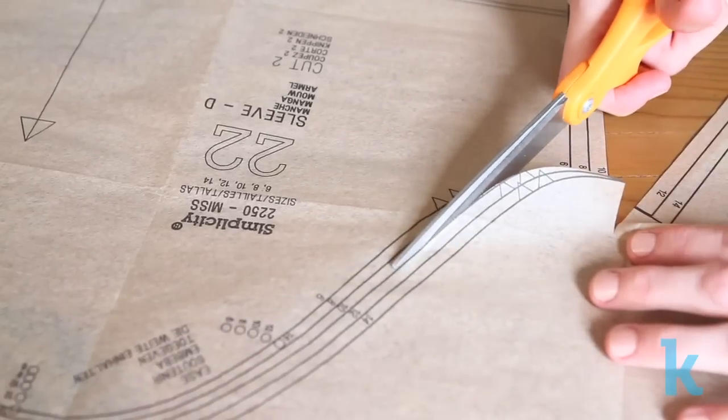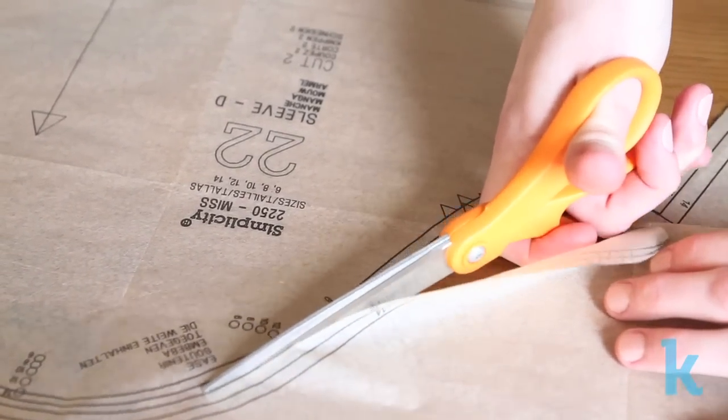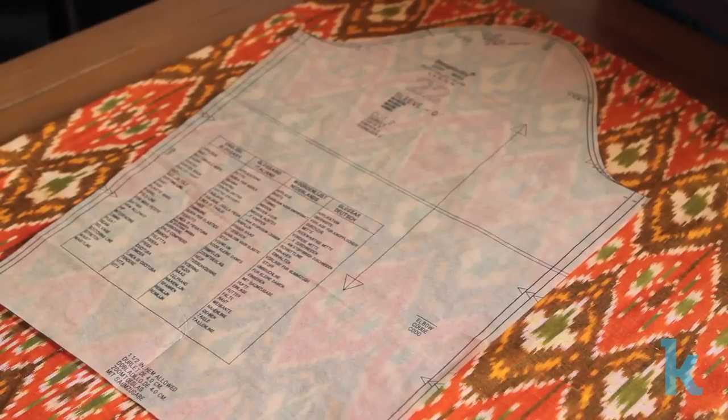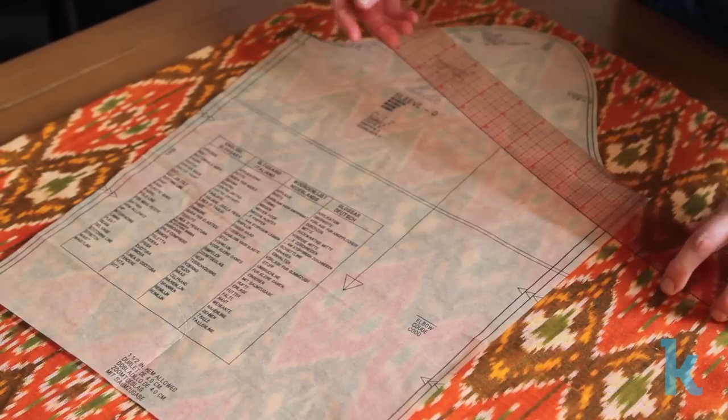Consult your pattern's suggested cutting layout to figure out how to fold your fabric and where to place the pattern pieces. Typically, the long arrow on a pattern refers to its grainline, which should be kept parallel to the fabric selvedge or finished edge.